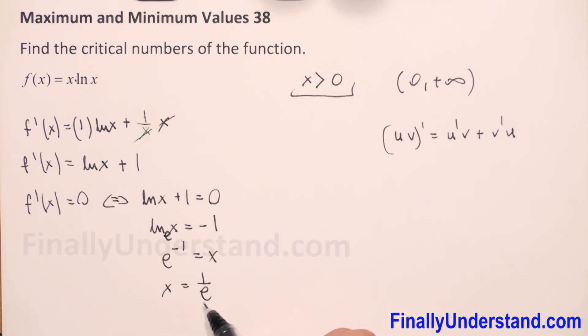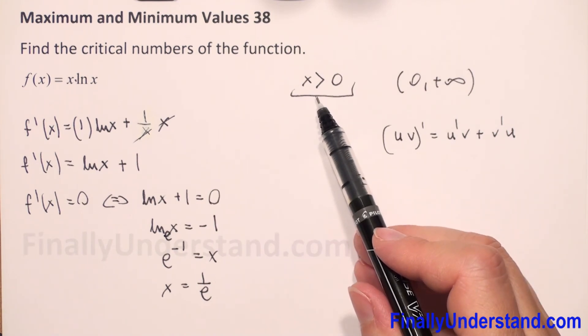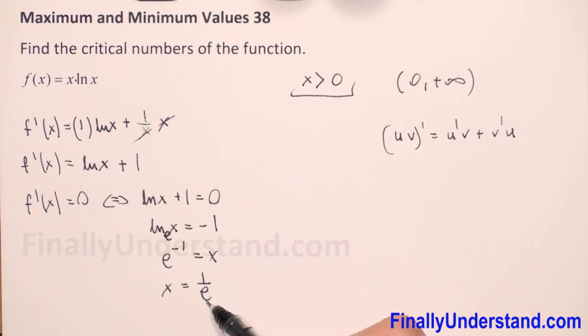Now, we have to check if this number 1 over e belongs to the domain of our function. 1 over e is greater than 0 because e is 2 point something, so it's a positive number. 1 over positive is positive. So we have critical number x equals 1 over e. This is my solution.